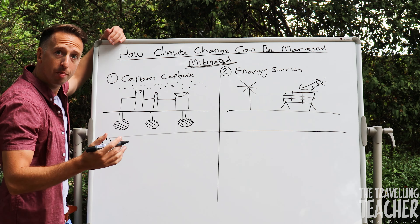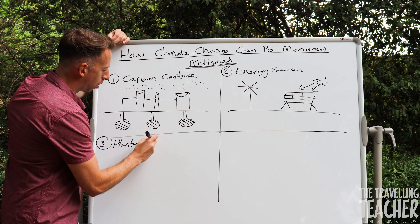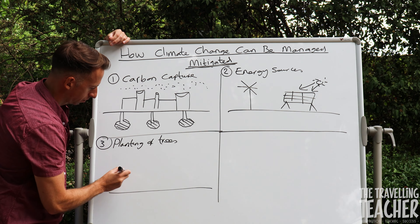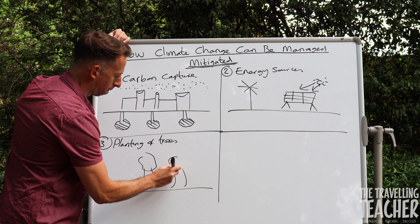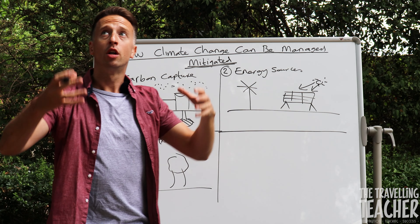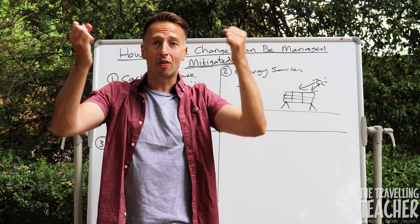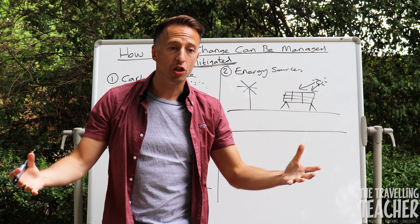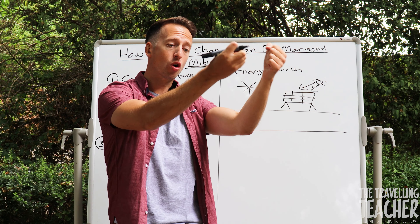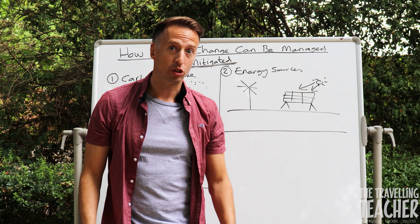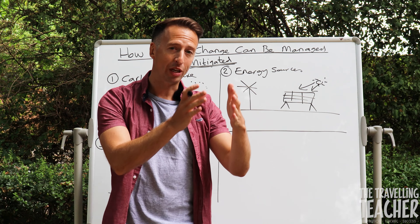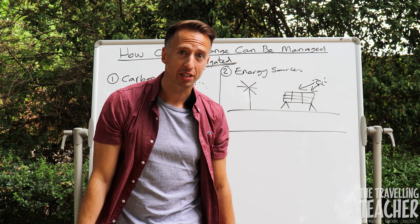The third method is afforestation — the planting of trees. Of course, as we all know, trees take out the carbon dioxide from the atmosphere and give out oxygen. The more trees, the more carbon dioxide they can take out and the more oxygen they can give, which is why it's really important that we slow down the rate of deforestation.